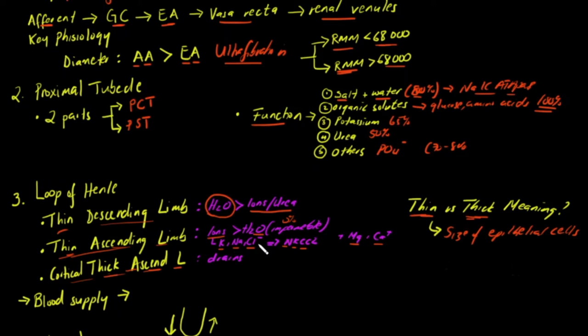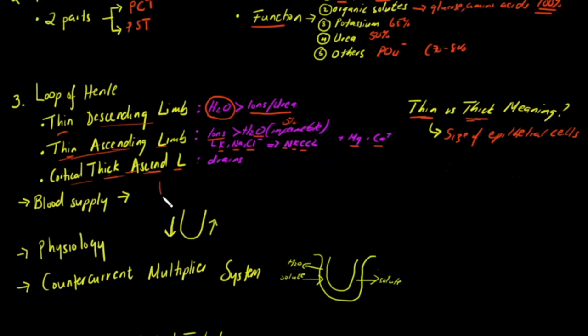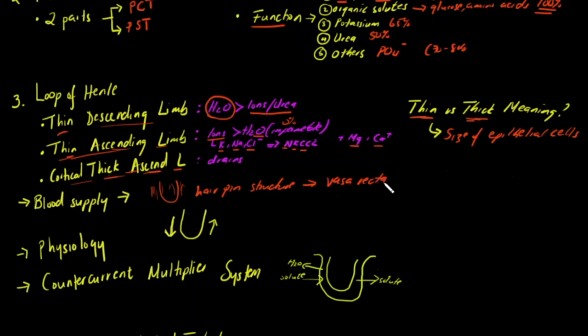Regarding the blood supply of the loop of Henle: it is surrounded by a network of capillaries called the vasa recta, which have a characteristic hairpin structure. This loop network of capillaries is very useful for reabsorbing solutes and water back into the blood.